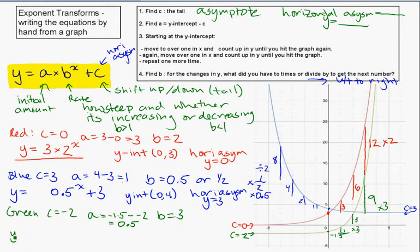Plugging in, Y is equal to A, which is 0.5, times B, which is 3, to the power of X. And in this case, C is negative, so I'll just say minus 2. That would be your equation.